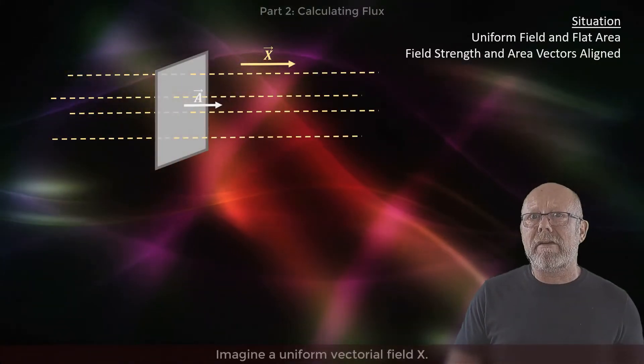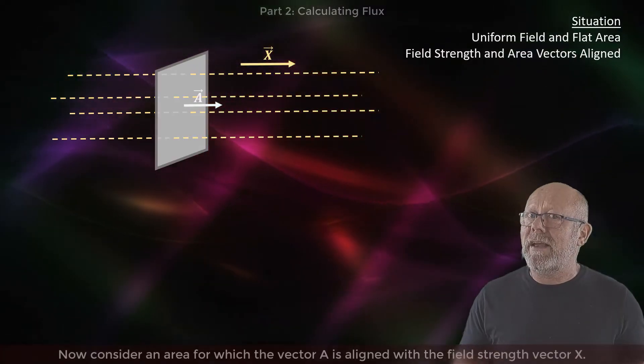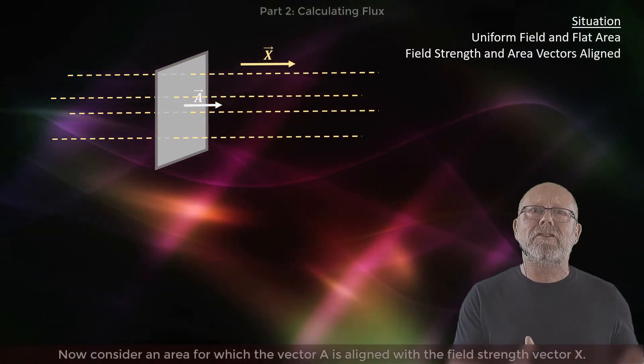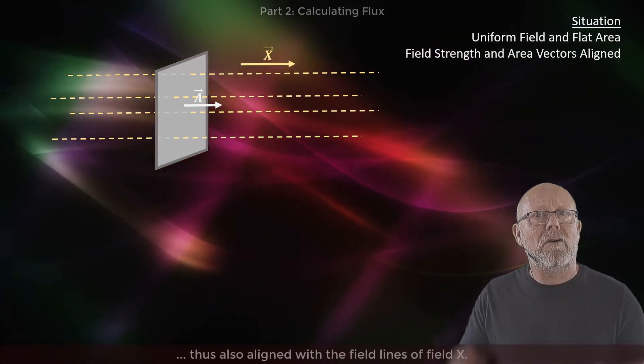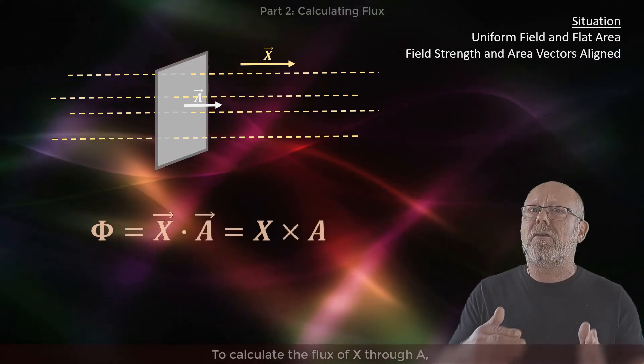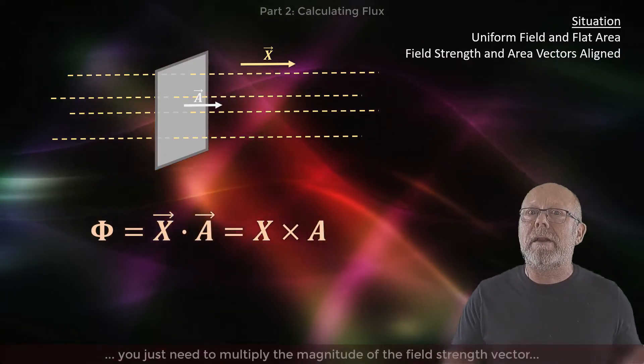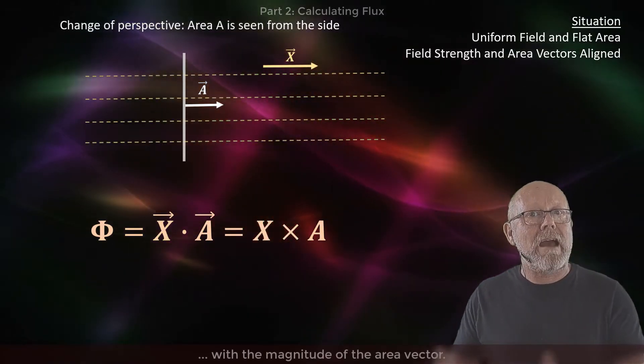Imagine a uniform vectorial field χ. Now consider an area for which vector A is aligned with the field strength vector χ, thus also aligned with the field lines of field χ. Here, to calculate the flux of χ through A, you just need to multiply the magnitude of the field strength vector with the magnitude of the area vector.